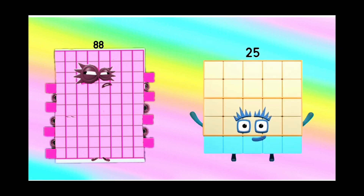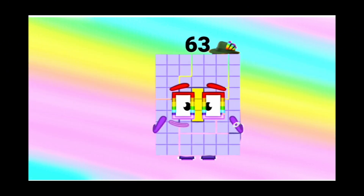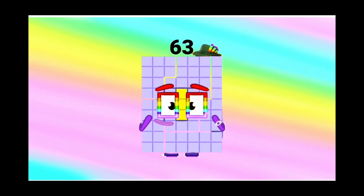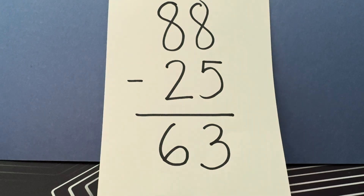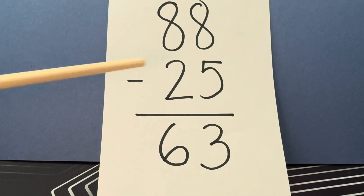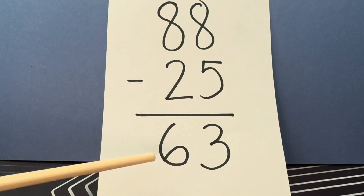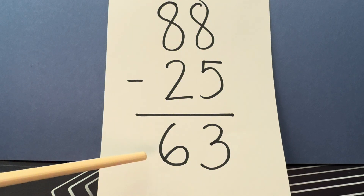88 minus 25 is equals to 63. Let's do it again: 88 minus 25 is equals to 63.